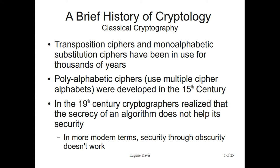Frequency analysis basically works like this: you have a listing of how many times a certain letter occurs, and you say, okay, in this encrypted message this character keeps popping up, so it's probably this mapped-over letter. In English, the first letter you're going to find is E. After that it's going to be some of the other vowels, then T, and then it goes from there. Basically, these are really easy to break as a result of frequency analysis.